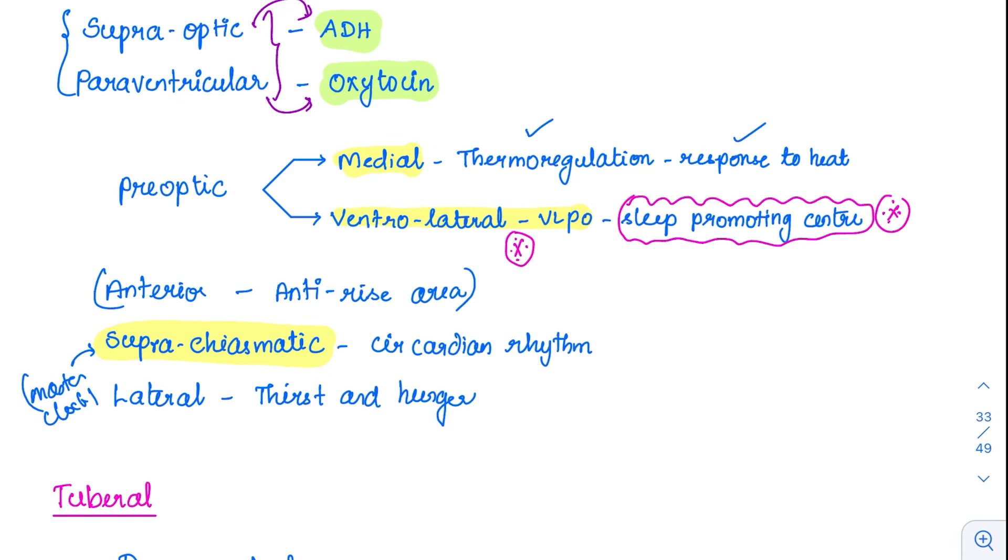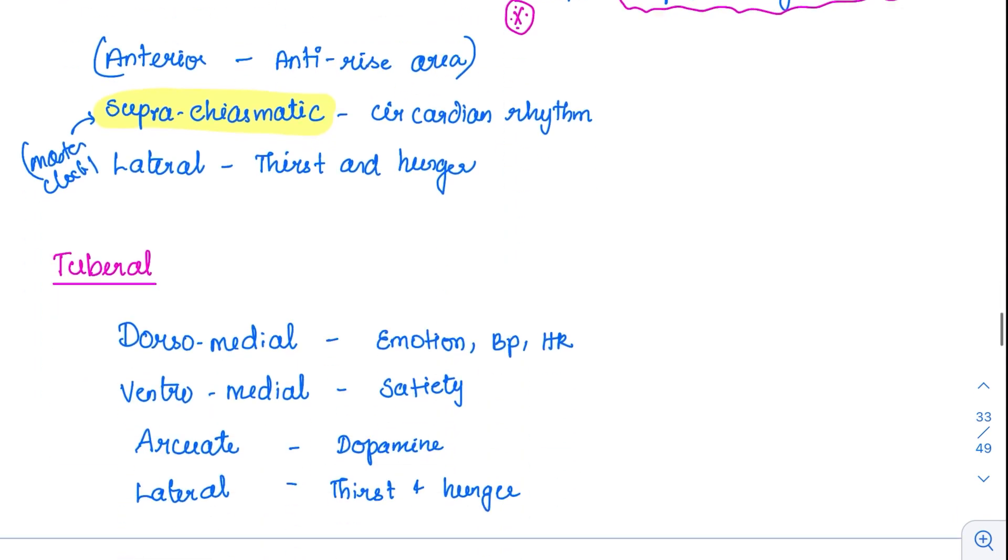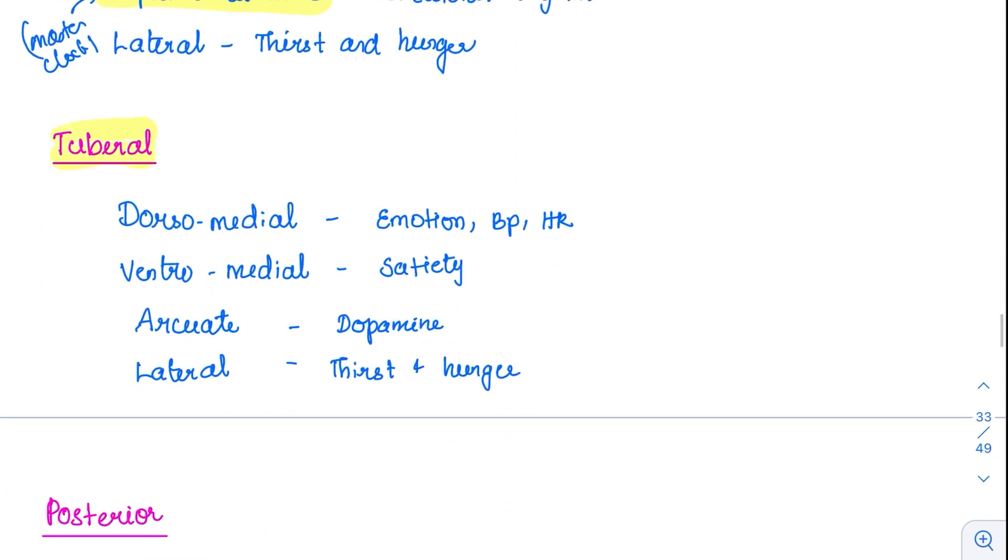Coming to the next group of nuclei, the tuberal. This tuberal has several divisions: dorsomedial, ventromedial, arcuate, and lateral. Lateral we have already seen - wherever lateral comes it is for thirst and hunger.